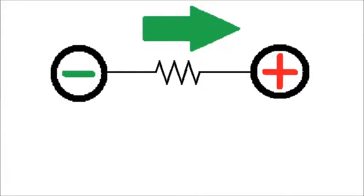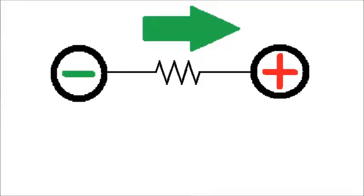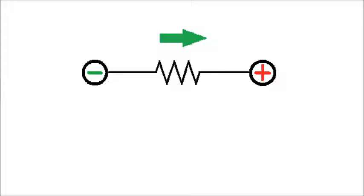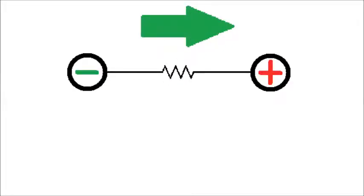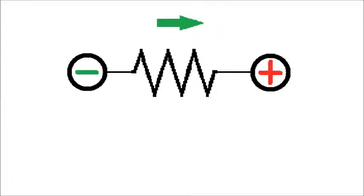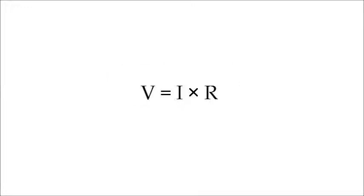If there's more voltage force, there's more current — more electrons are moved. If there's less voltage, there's less current. For a set amount of voltage, if there's less resistance, the current will be greater; if there's more resistance, there will be less current. A scientist named Georg Ohm worked on this. We call this relationship between voltage, resistance, and current Ohm's Law.